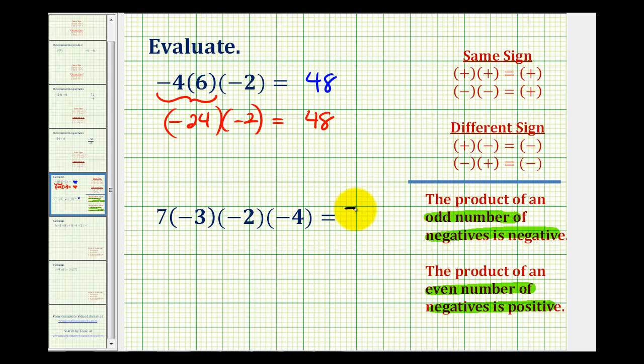And then again, once we know the sign of the product, we can just multiply, ignoring the signs. So 7 times 3 would be 21, times 2 would be 42, times 4 would be 168. So the product is negative 168.